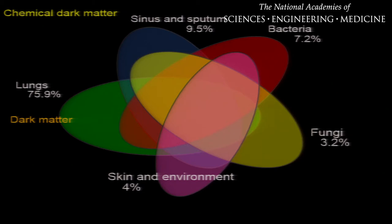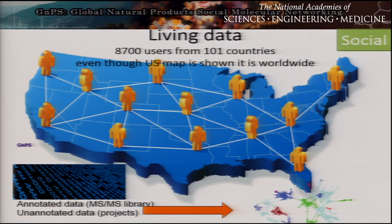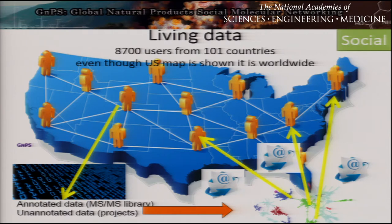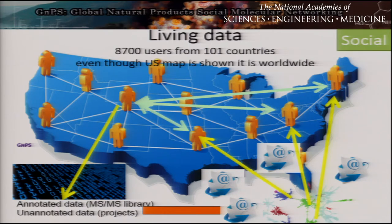So how do we begin to uncover this chemical dark matter? In order to address this specific challenge, we've created a concept of living data. On our infrastructure, there are multiple data sets from various habitats from scientists all across the world. These data sets are matched to our libraries on a regular basis. So if a scientist uploads a new annotated data set with associated mass spectral libraries, all the other data sets are searched against this new mass spectral library, and the subscribers of these unannotated data sets are sent an email informing them of new identifications found in their data set. We hope this allows scientific dialogue and collaboration between scientists all across the world, helping us to uncover this chemical space.